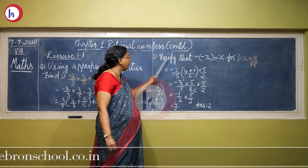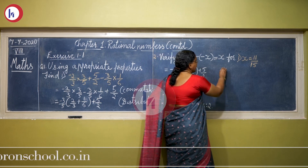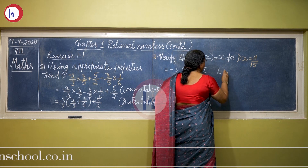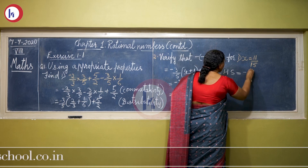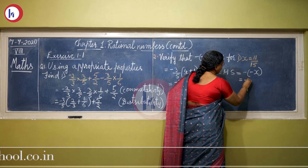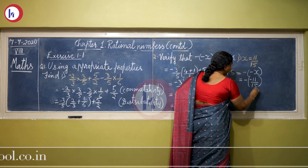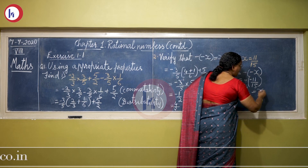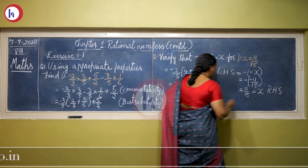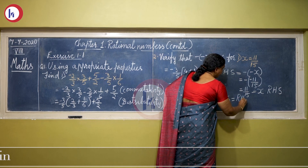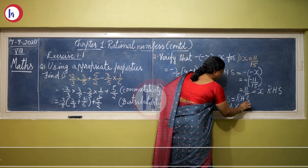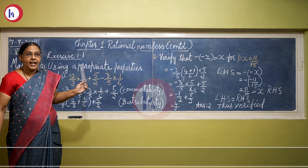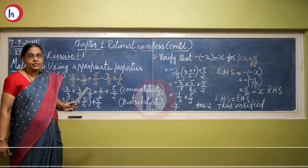For verification we use LHS and RHS. LHS: −(−x) = −(−11/15). Minus times minus gives plus, so LHS = 11/15 = x, which is the RHS. Therefore LHS = RHS, verified. I have solved these two sums. You can do your homework accordingly — it is given on the website. Thank you.